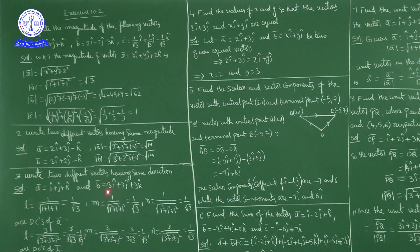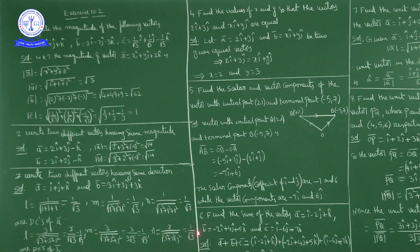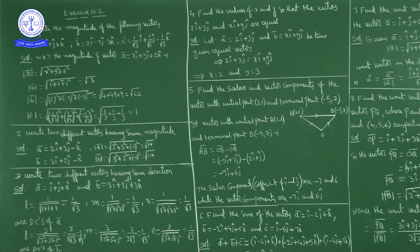For vector b̅ = 3î + 3ĵ + 3k̂: l = 3/√(9 + 9 + 9) = 3/√27 = 3/(3√3) = 1/√3. Similarly m = 1/√3 and n = 1/√3. Direction cosines of b̅ are also (1/√3, 1/√3, 1/√3), the same as a̅. So a̅ and b̅ are two different vectors having the same direction.